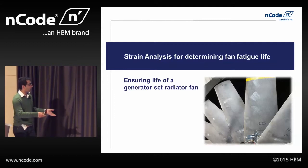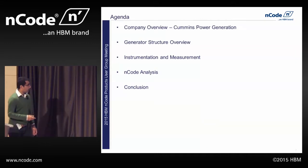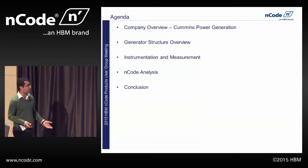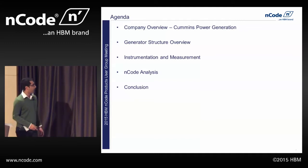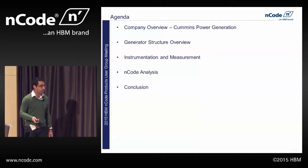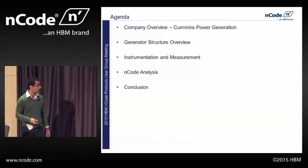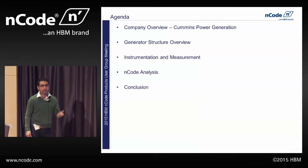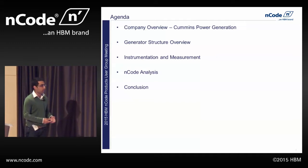The idea is to present something which we do on a daily basis. Going over the agenda: the first part is the company overview of what we do as Cummins Power Generation. The second is what essentially a genset is — a small overview of what Cummins gensets are and what makes them up. The third is instrumentation and measurement, including our FEA analysis, application of strain gauges, and other transducers, and how we measure the data. Then how we integrate nCode into the analysis to understand when a fan will fail, how many hours until it fails, or where it will crack. And finally, the conclusion — a small summary of why we use nCode.